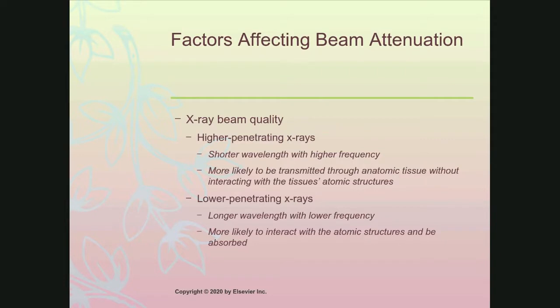X-ray beam quality also affects attenuation. When you have higher penetrating x-rays — shorter wavelength, higher frequency, more energy — those are more likely to be transmitted through the tissue without interacting with any atomic structure. Lower penetrating or lower energy x-rays with longer wavelength and less frequency are more likely to interact with the atomic structure and potentially be absorbed. So high KVP means more transmission and more Compton scatter, less photoelectric absorption. Low KVP means more photoelectric absorption, less transmission, and less Compton scatter.